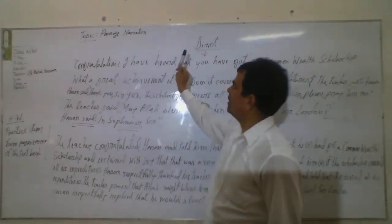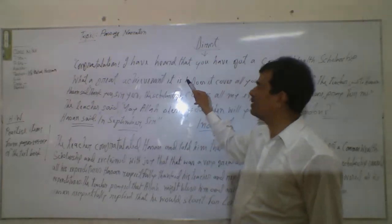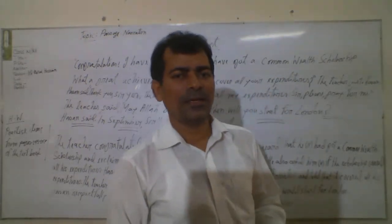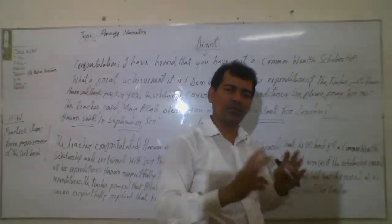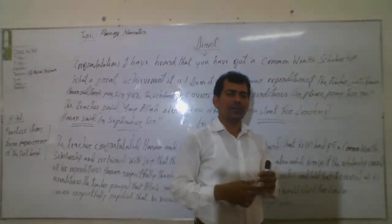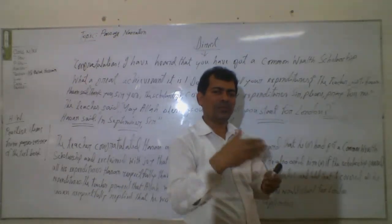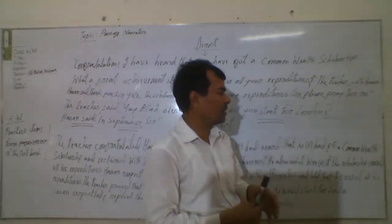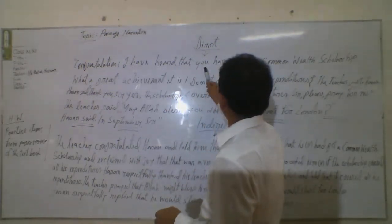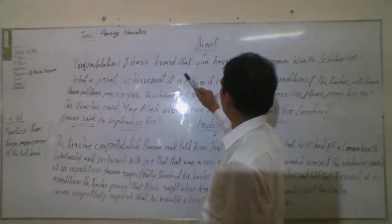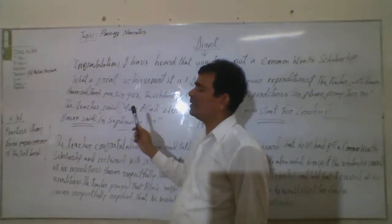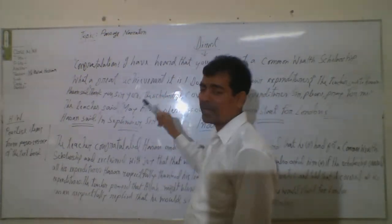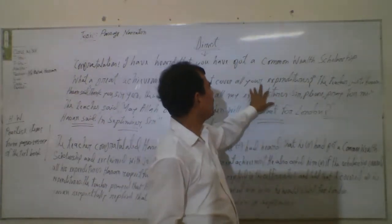The teacher congratulated Hassan and told him that he had heard that he had got a Commonwealth Scholarship. Here, 'he' has been used for both the speaker and the listener, so we need to clarify which 'he' refers to whom by using the first letter of their name in brackets. The teacher told him that he had heard that he, Hassan, had got a scholarship. Then he exclaimed with joy that it was a very great achievement, and again asked him if the scholarship covered all his expenditures.